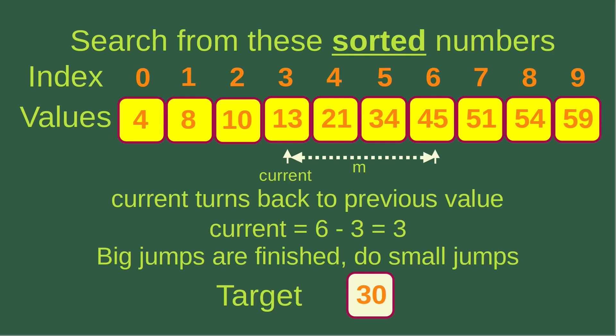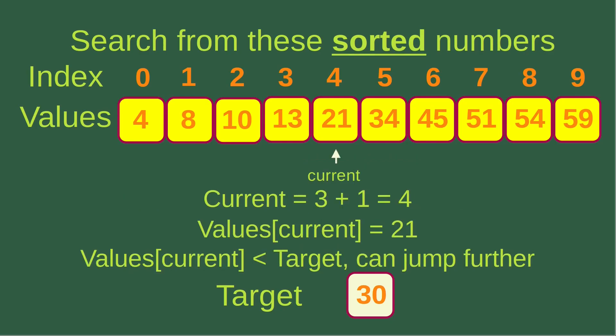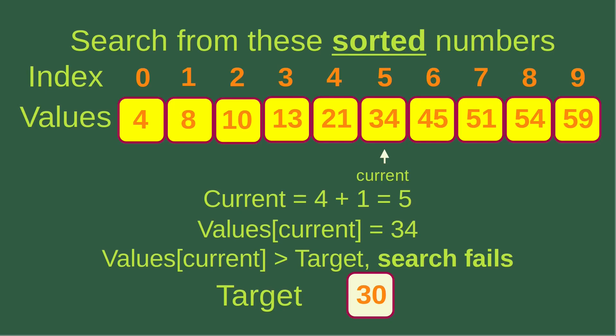All the big jumps are finished, so now we do small jumps one element by one element. The current index is updated to 4; the value is 21, which is still smaller than 30, so we jump further. The current index becomes 5, and the corresponding value is 34. But 34 is larger than our target, which means the target 30 doesn't exist in our sorted array. We have no choice but to say that the search fails — the target cannot be found.